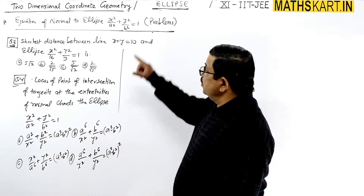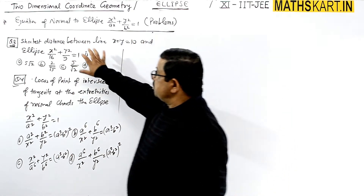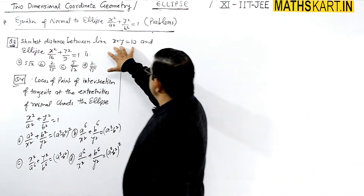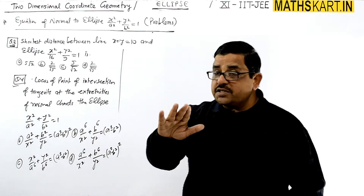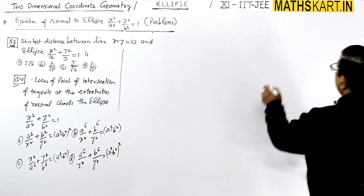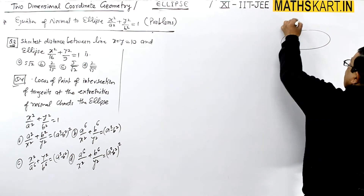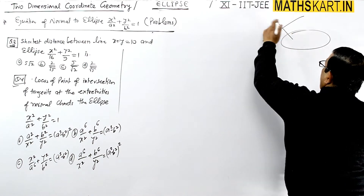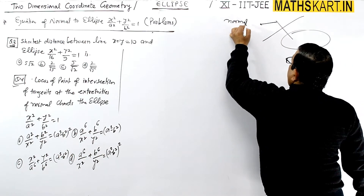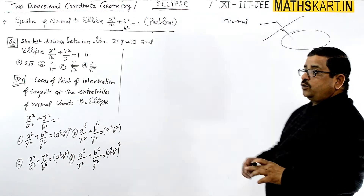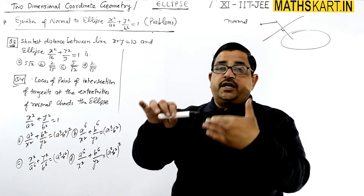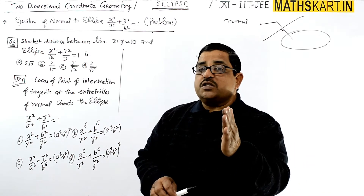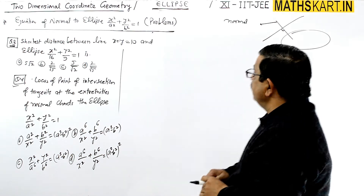We'll see two more questions based on the equation of normal — question number 3 and 4. Question 3 asks us to find the shortest distance between a given line and an ellipse. For this, we'll create a normal line, because the normal line will give us the shortest distance.